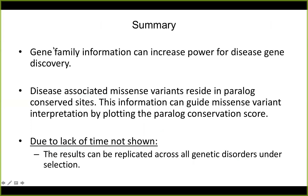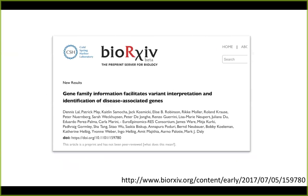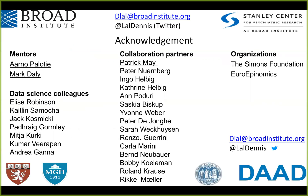I hope I could convince you that gene family information is useful to gain power in disease gene discovery. We could show for the first time empirically that disease-associated missense variants fall into paralog-conserved sites, which is a very important notion. What I didn't show today is that all these observations can also be replicated across diseases — we have done similar analyses for the whole ClinVar dataset and show similar results, so our observations are not brain-disorder specific. If you're interested in the project, feel free to look at our paper. I would like to thank my mentors, and I'm happy to receive questions.